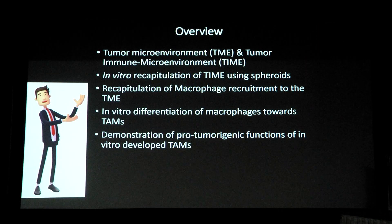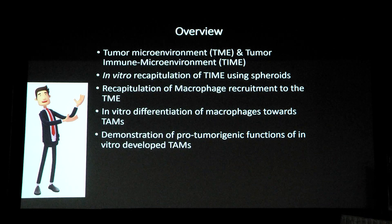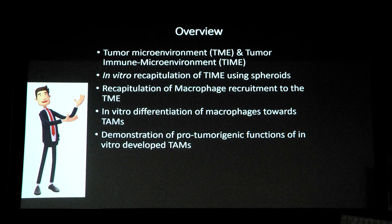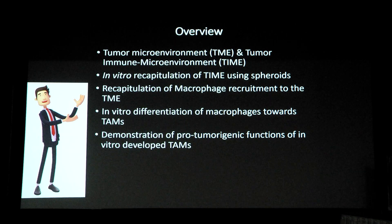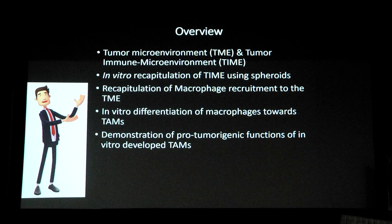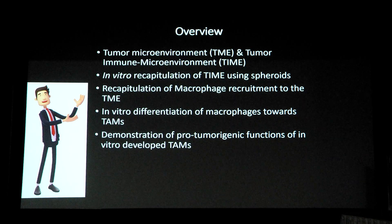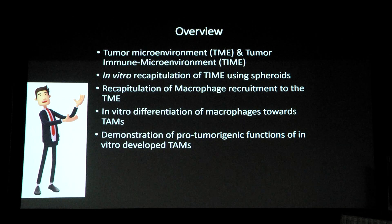This cartoon is telling about what I'm going to cover in the next ten minutes. I will mostly be talking about the tumor microenvironment, especially the tumor immune microenvironment, and how we can recapitulate it using a simple model — spheroids. Most importantly, I'll cover macrophage recruitment towards the tumor microenvironment, how spheroids brainwash macrophages to become tumor-associated macrophages, and how these TAMs help cancer cells invade surrounding tissue.